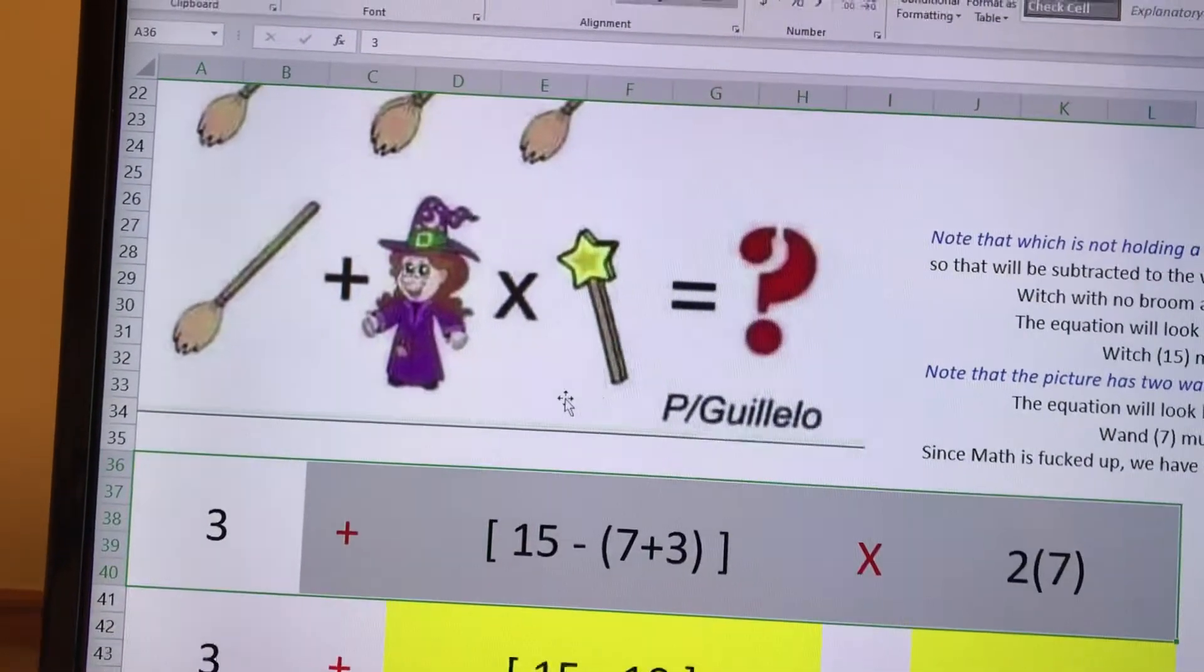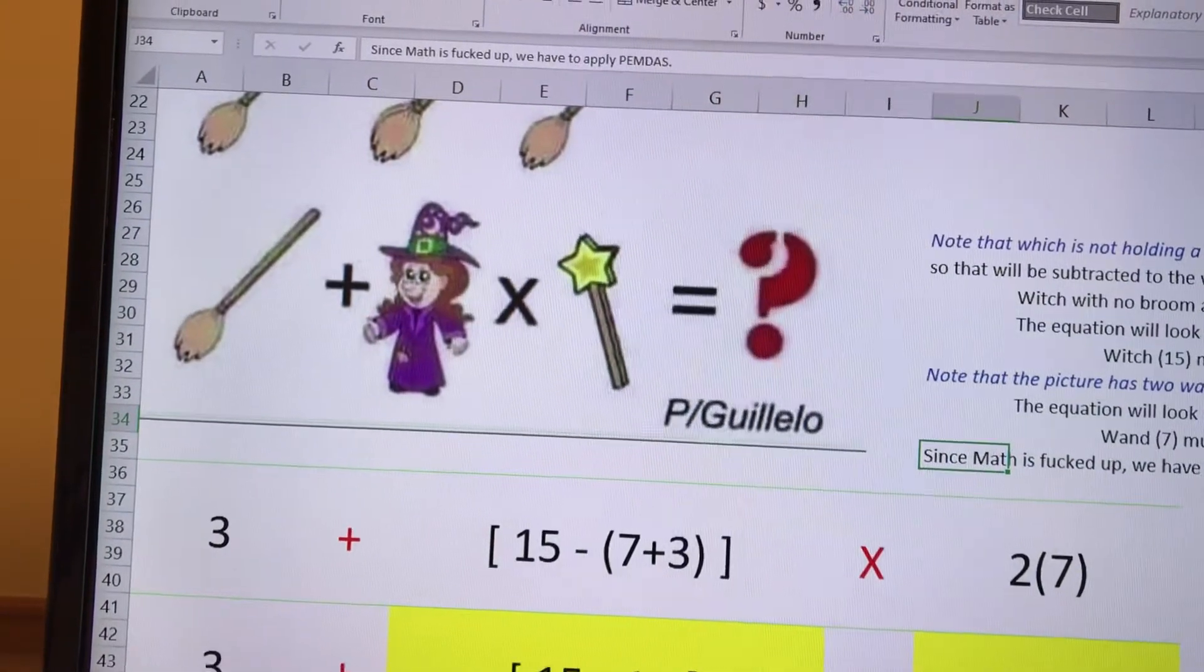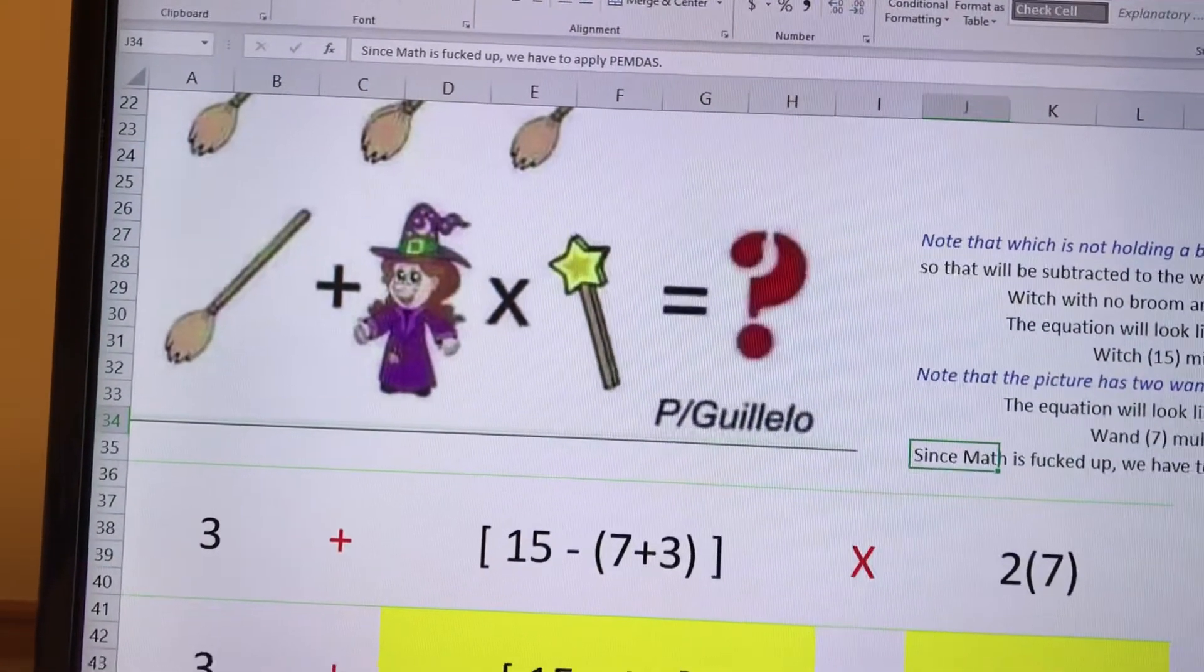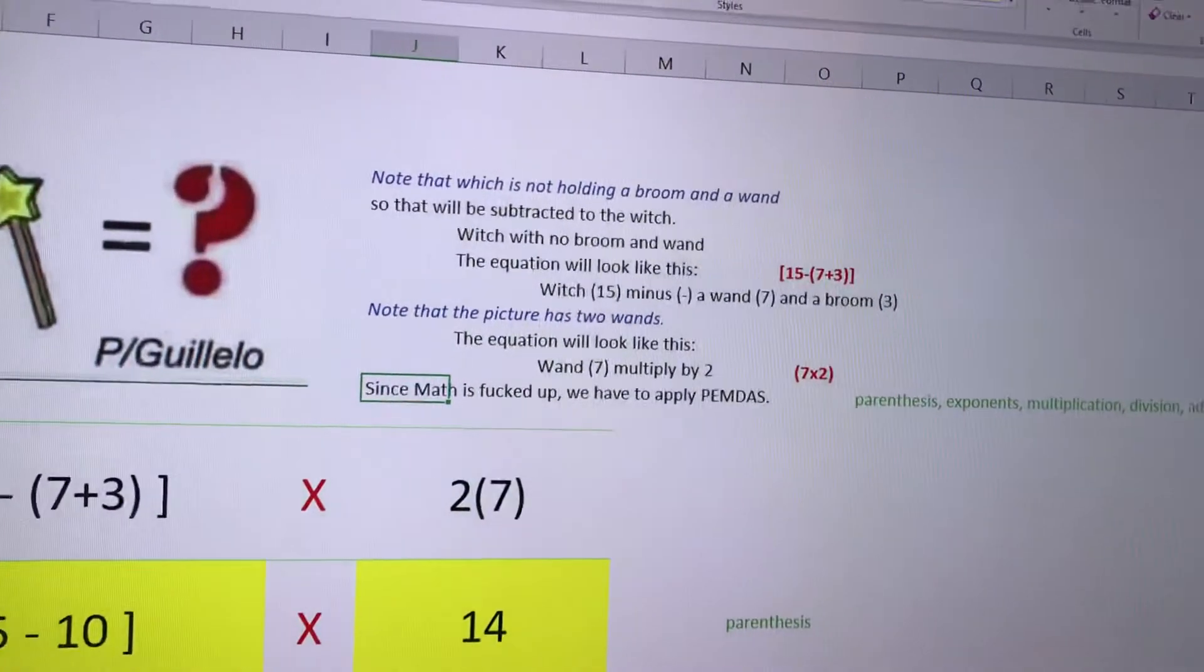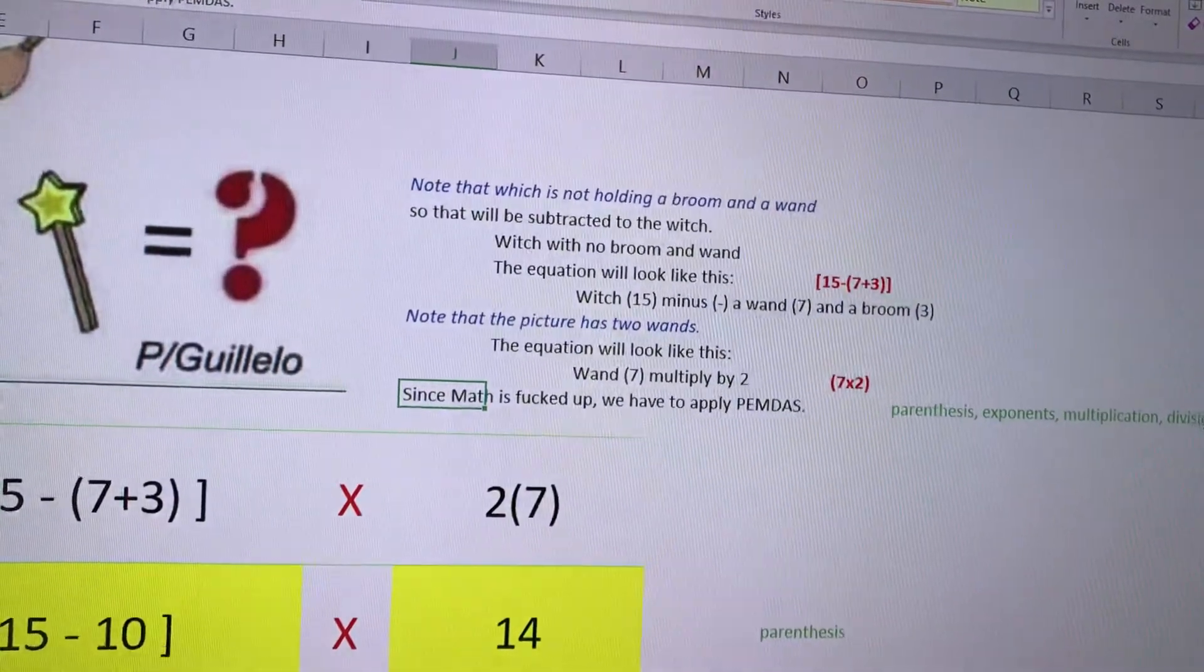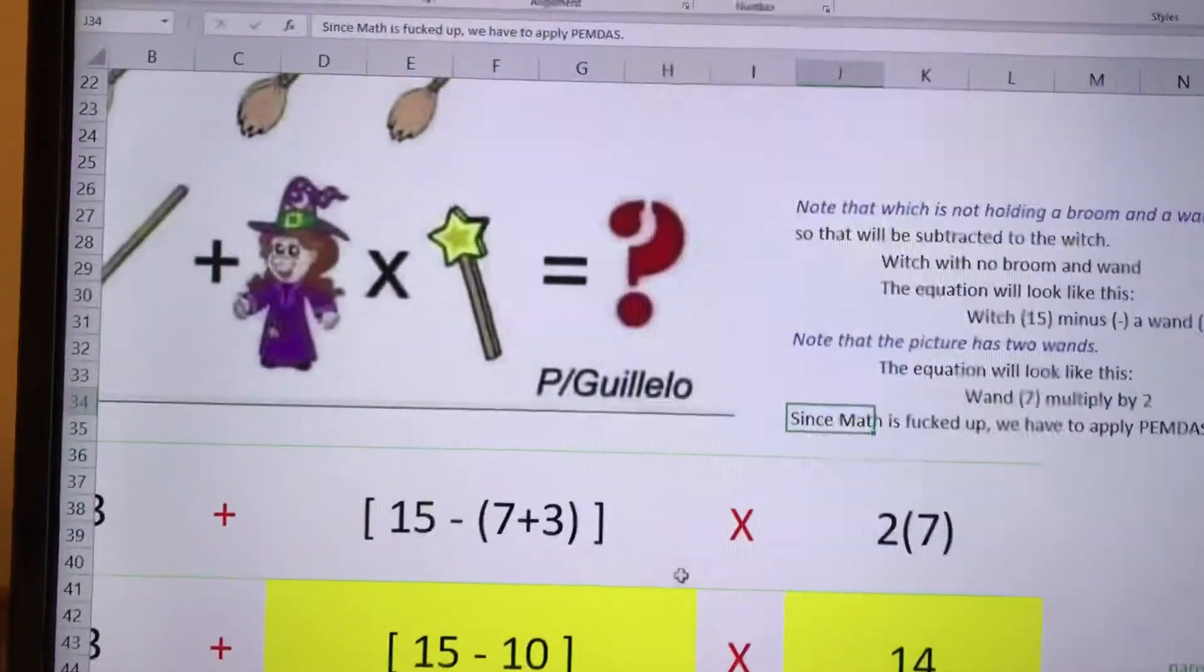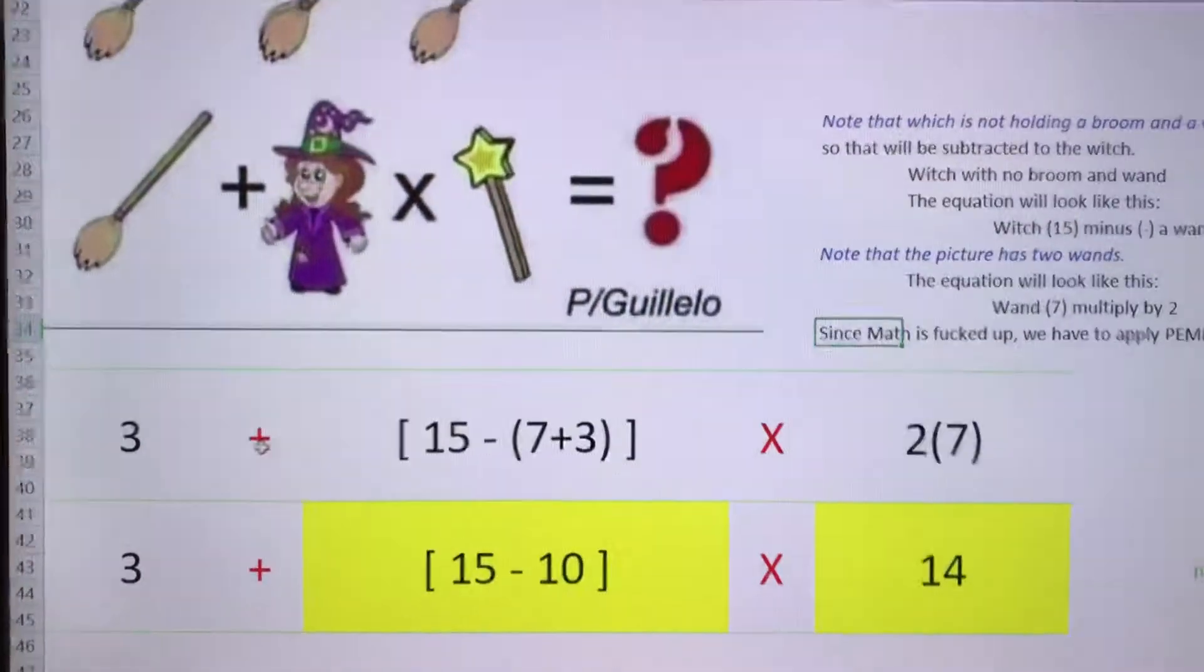So my equation ends up like this. But since math is fucked up, you know, we apply PEMDAS, which is the acronym for parentheses, exponents, multiplication, division, addition, and subtraction.